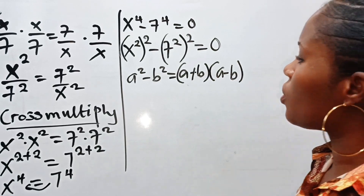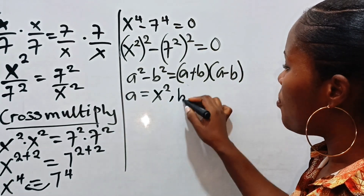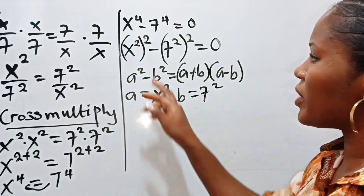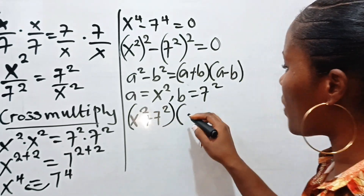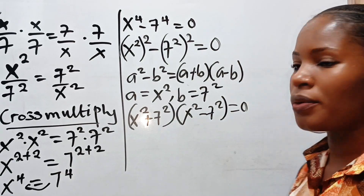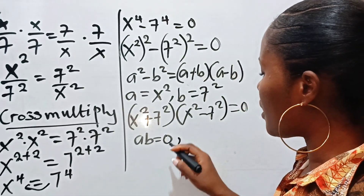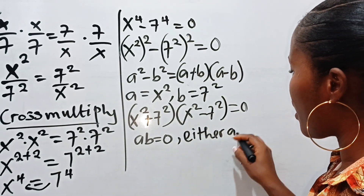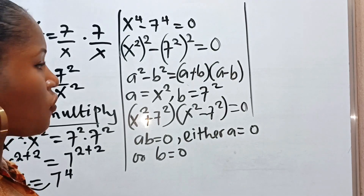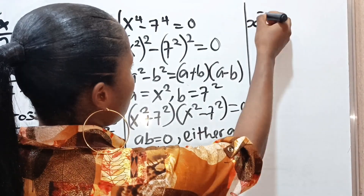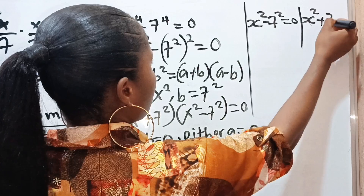Relating this to what we have here, our a is equal to x squared and our b is equal to 7 squared. So that means we can express this as x squared plus 7 squared, multiplied by x squared minus 7 squared, is equal to 0. Remember that when a multiplied by b is equal to 0, then either a is equal to 0 or b is equal to 0.